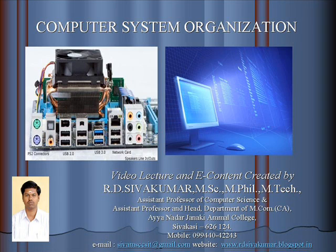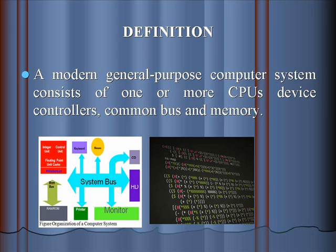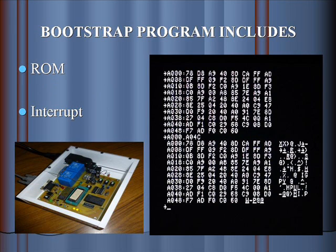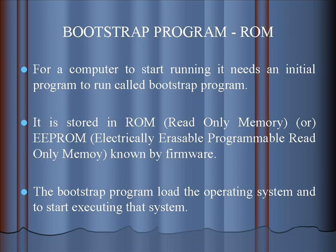Sivagasi. Mobile: 099-440-42343, Email: sivamrcsit@gmail.com, Website: www.rdsivakumar.blogspot.in. Computer System Organization Definition: A modern general-purpose computer system consists of one or more CPU devices, controllers, a common bus, and memory.